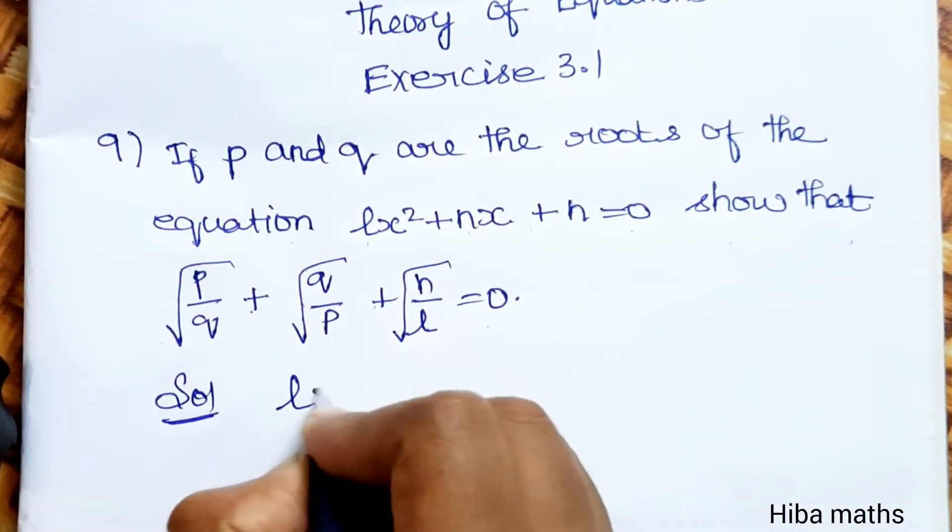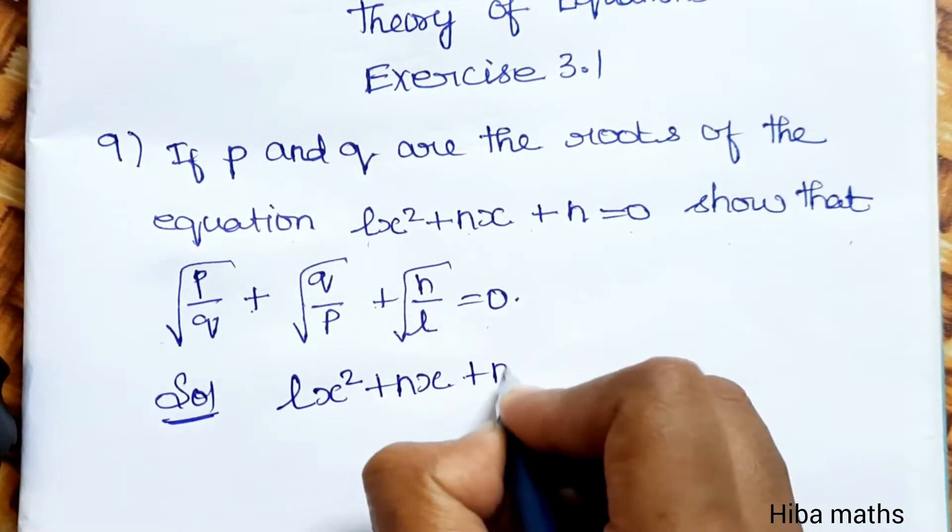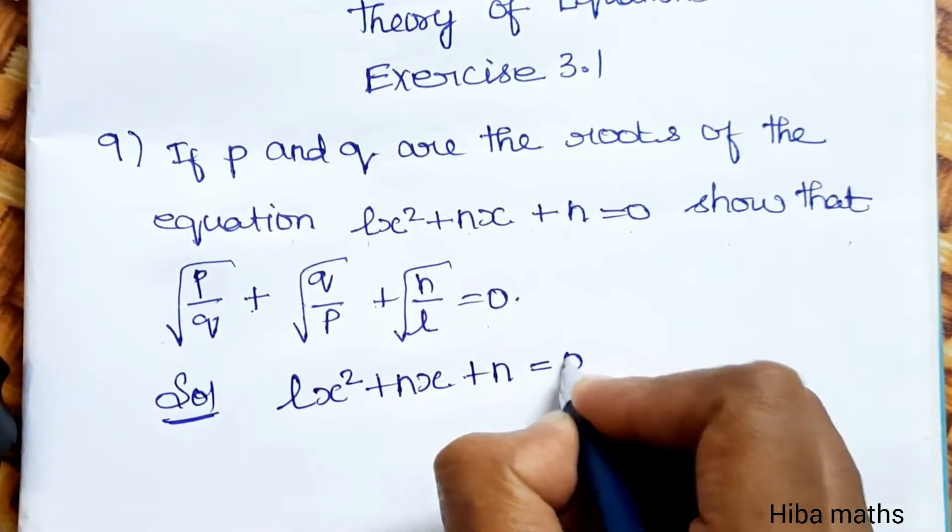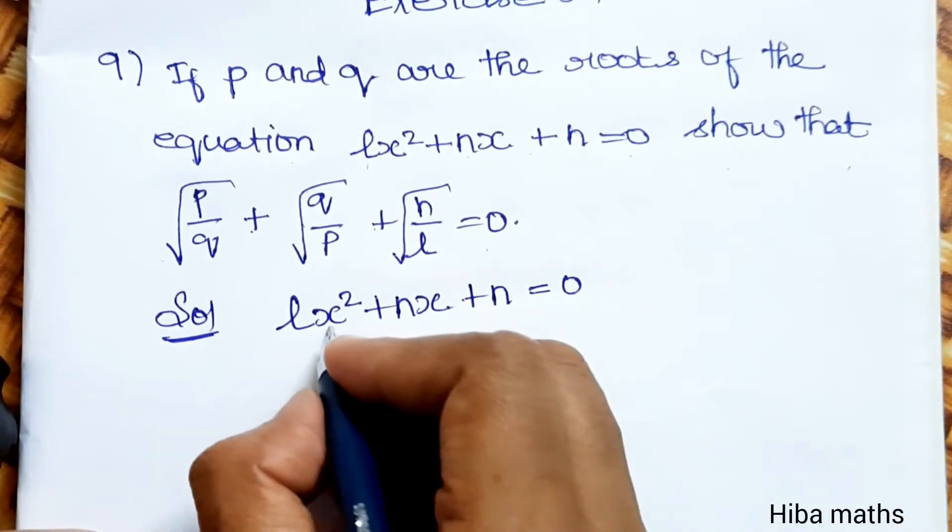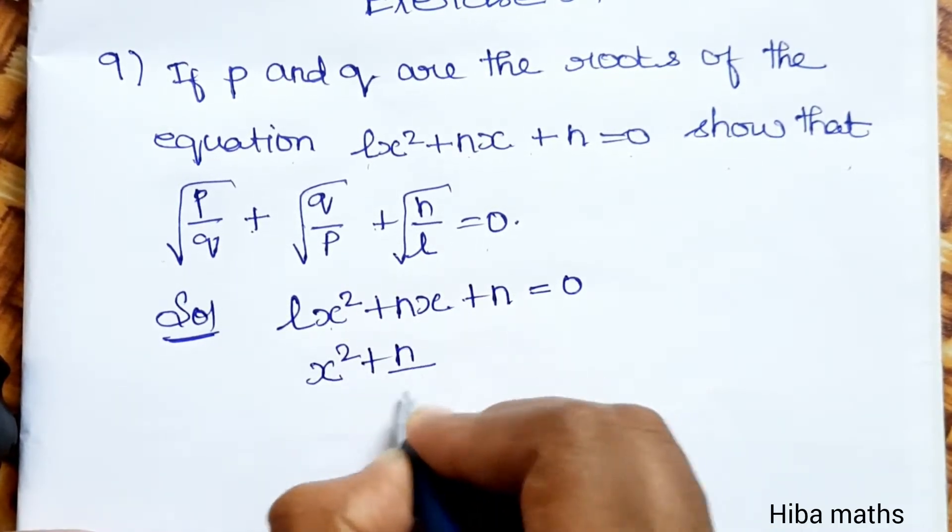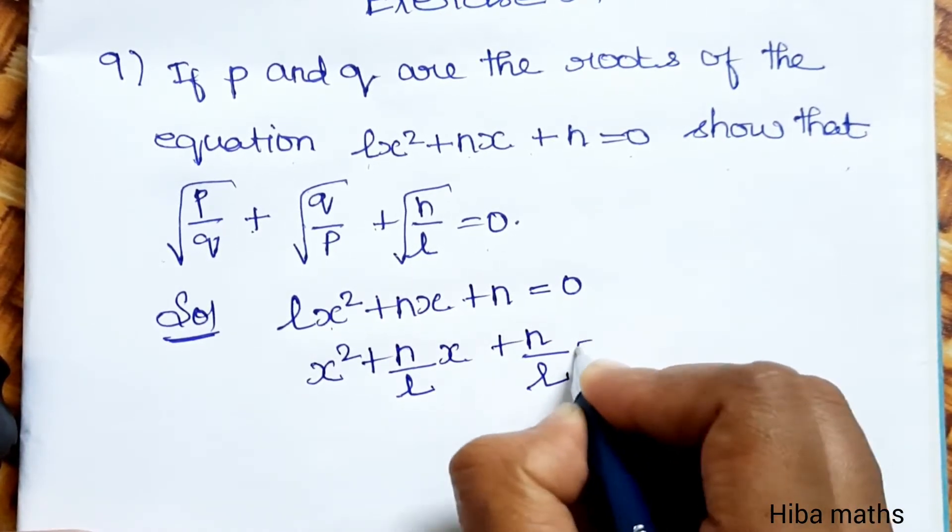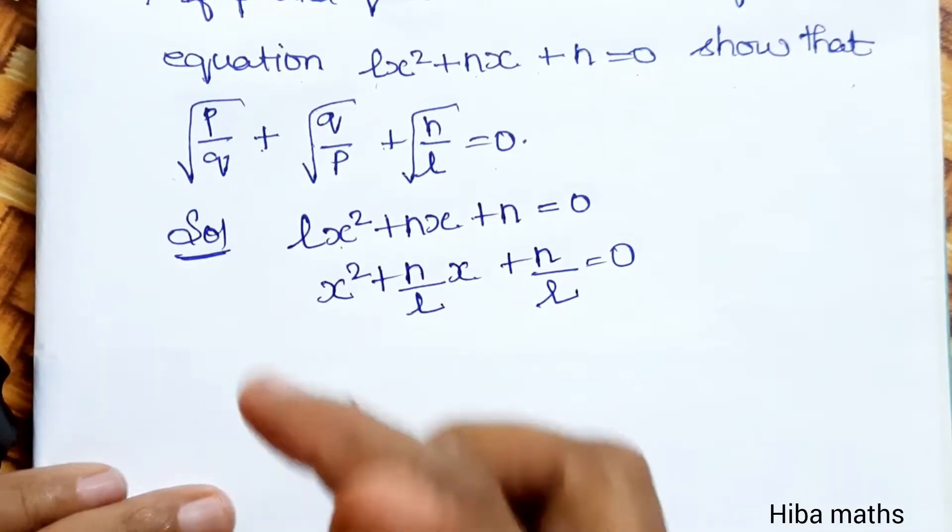Solution: For the equation lx² + nx + n = 0, divide by l: x² + (n/l)x + (n/l) = 0. So now the roots are...